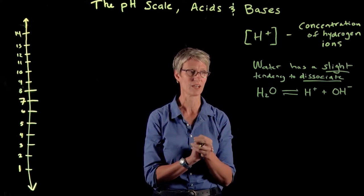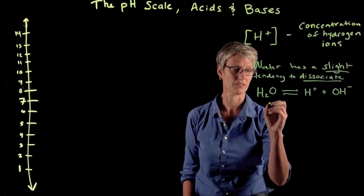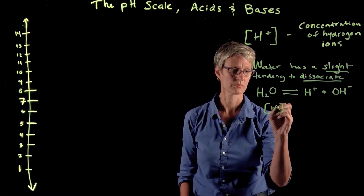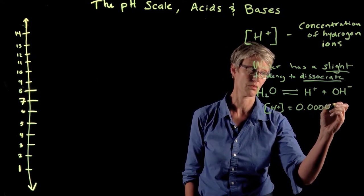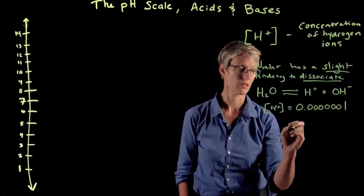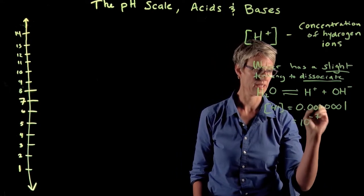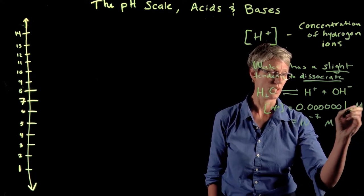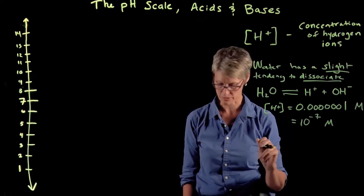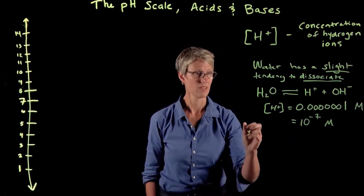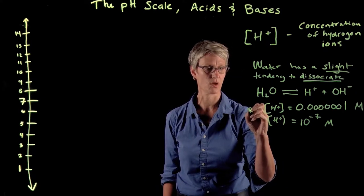The concentration of hydrogen ions in pure water is 0.0000001, and another way to express that is 10^-7 molar. To remind you, the big M means molar, which means moles per liter—it's a unit of concentration. This is what the concentration of hydrogen ions looks like in pure water.